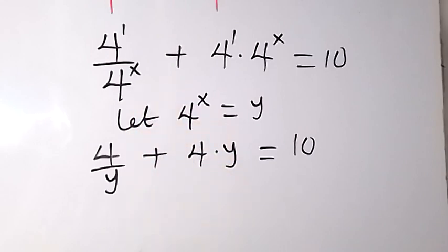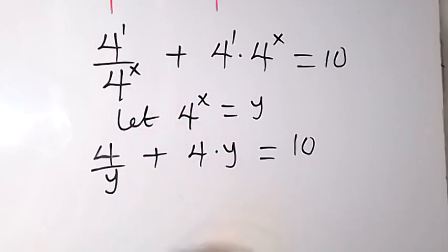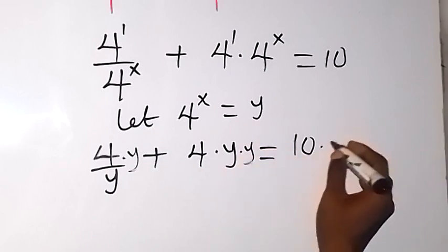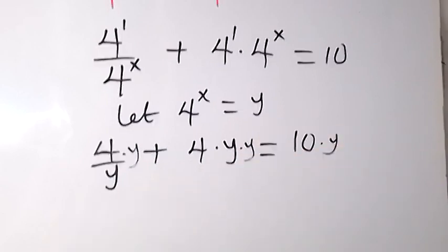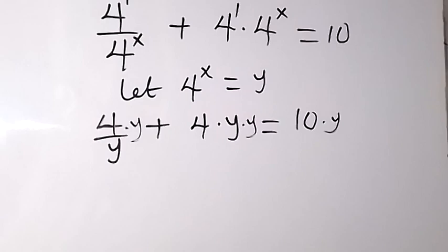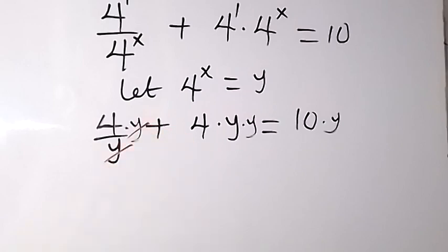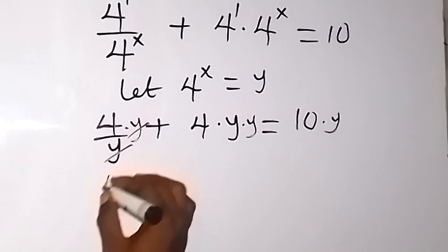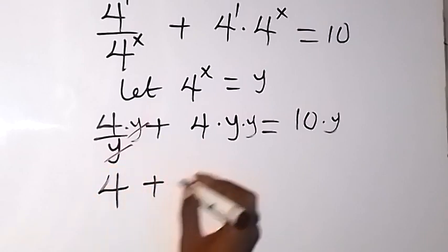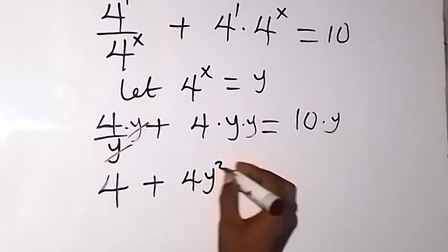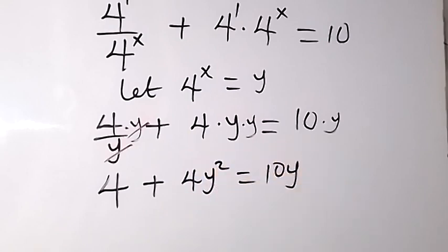We have replaced 4 raised to power x with y. Now let's clear the fraction by multiplying both sides by y. Multiplying both sides by y causes y to cancel in the first term, leaving us with 4 plus y times y, which gives 4 plus 4y squared, equals 10y.